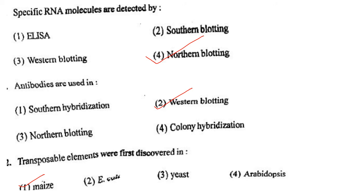Next one: Transposable elements were first discovered in option 1, maize; option 2, E. coli; option 3, yeast; option 4, Arabidopsis. Answer is option 1: maize.